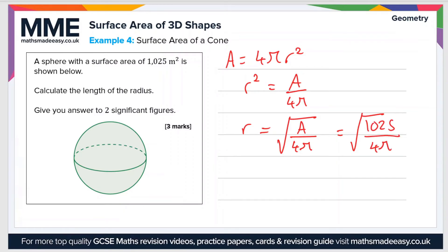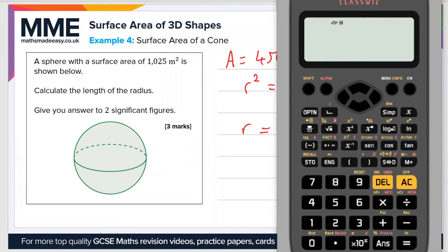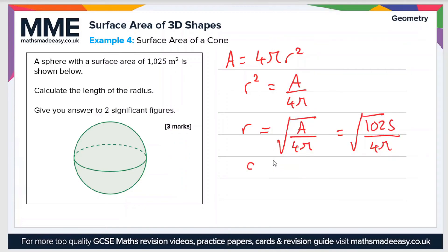Let's plug that into a calculator. The radius is the square root of 1025 over 4π, which gives us a value of 9.031, or to two significant figures 9.0 meters. The units of the radius will be in meters since the original surface area was given to us in meters squared.